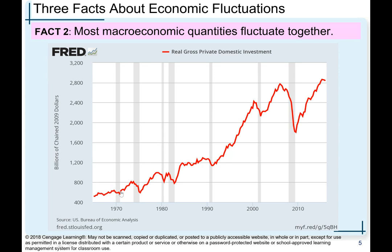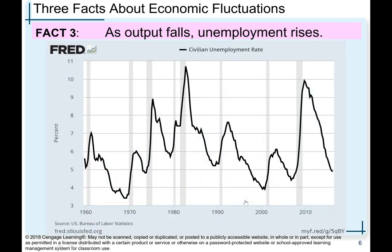You can see unemployment, growth in GDP, and investment spending all vary together. Fact number three: as output falls, unemployment rises. Here you see unemployment over the same period from 1960. Corresponding with every recession — the shaded area — there was a sharp increase in unemployment, such as in the recession of 1960.